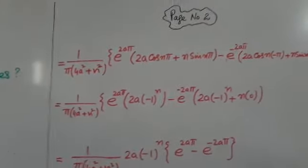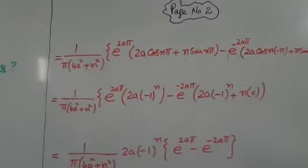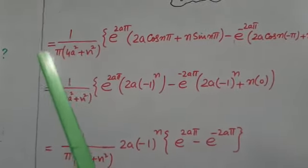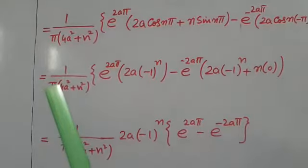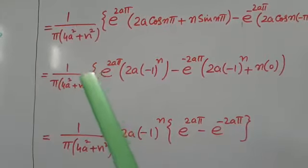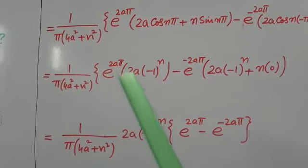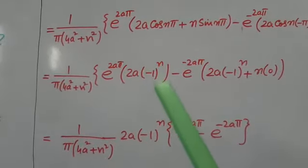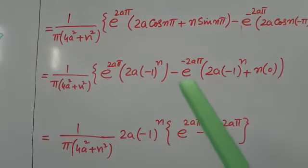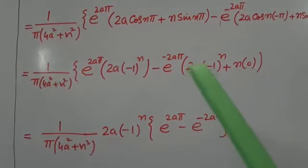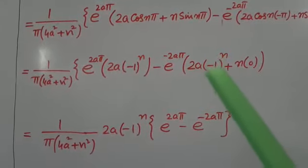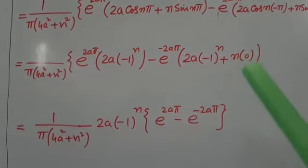Boundaries we have applied. Now 1 over π into 1 over 4a² plus n² into e to the 2aπ into 2a times (-1)ⁿ minus e to the minus 2aπ into 2a times (-1)ⁿ plus n into 0.